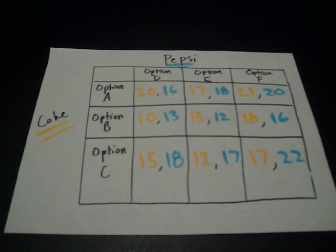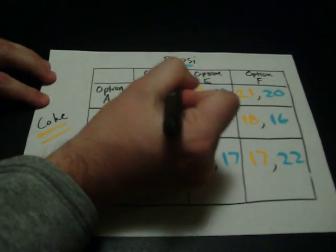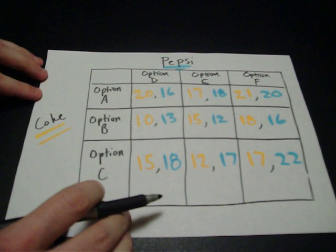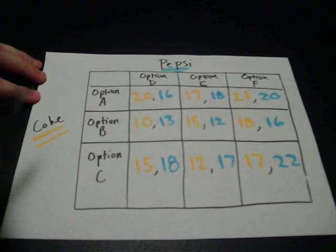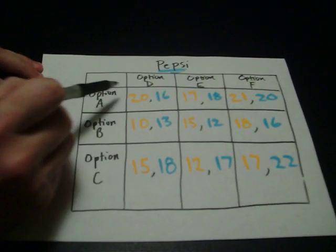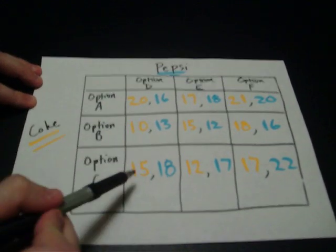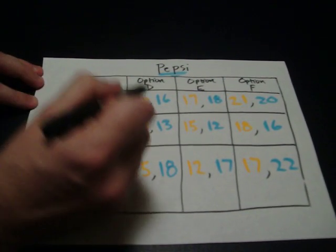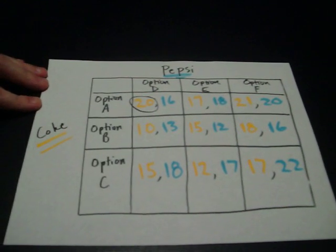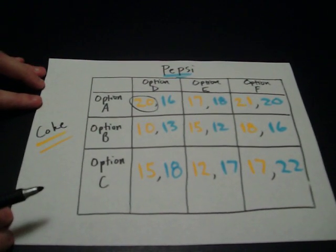So if Pepsi says, okay, we're going to pick option D and come down this column, Coke, in response to that, would pick option A, because if they pick A, they get $20 million. If they pick B, they only get $10 million. If they pick C, they get $15 million. So I'm going to circle the payoff that they get when they pick A.